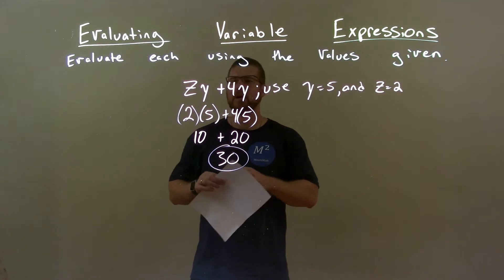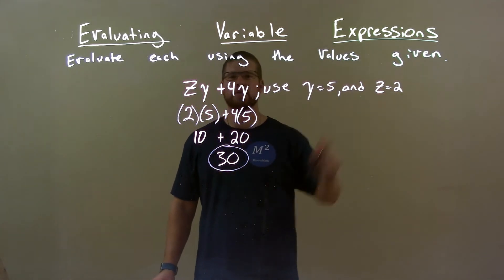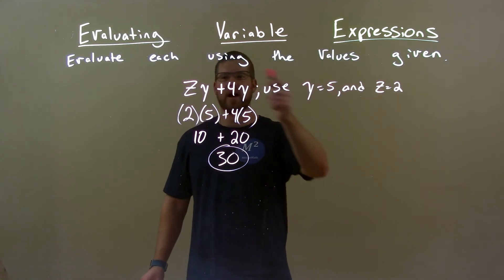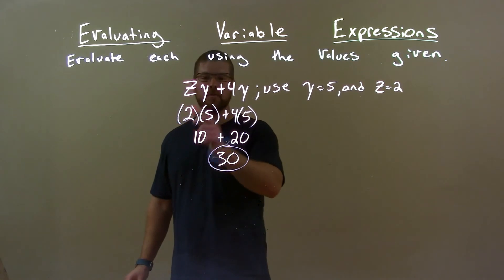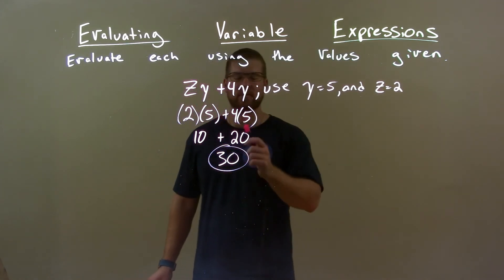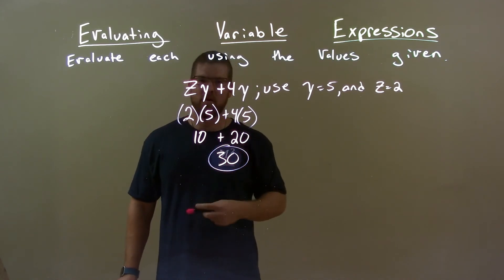Quick recap, we're given zy plus 4y and using y for 5, z for 2. Now substitute 5 for my y's, 2 for my z's. Then we simplify. 2 times 5 is 10, 4 times 5 is 20, 10 plus 20 is 30, 30 is our final answer.